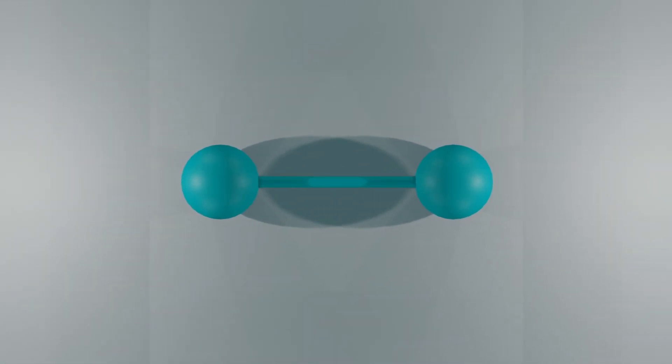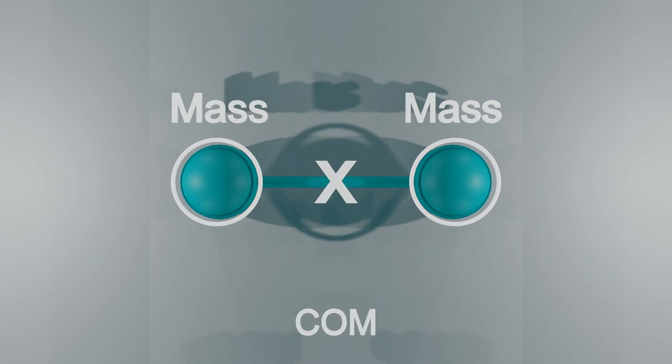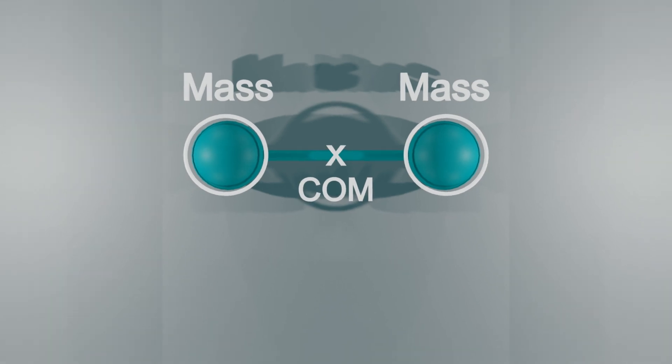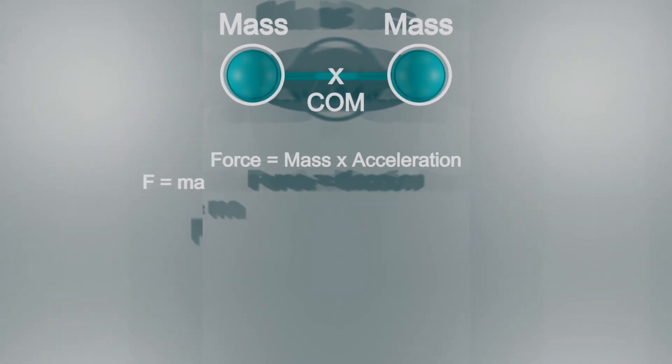But let's look a little bit deeper to see why this is. A dumbbell can be modeled as a system of two masses connected by a massless bar. Now that we have our model, we can bring in Newton's second law, force equals mass times acceleration.